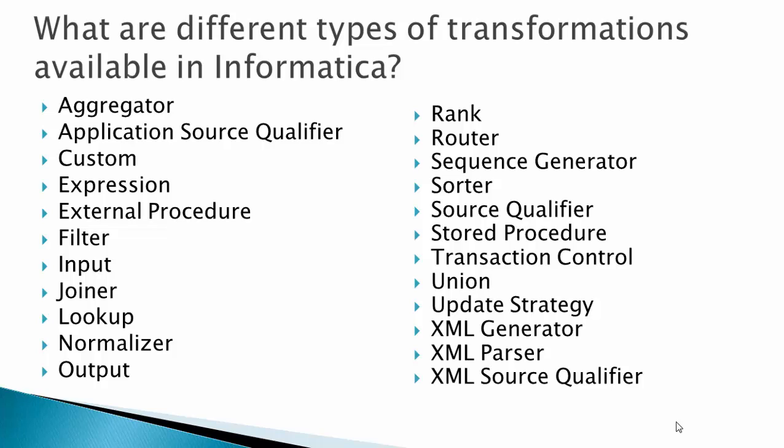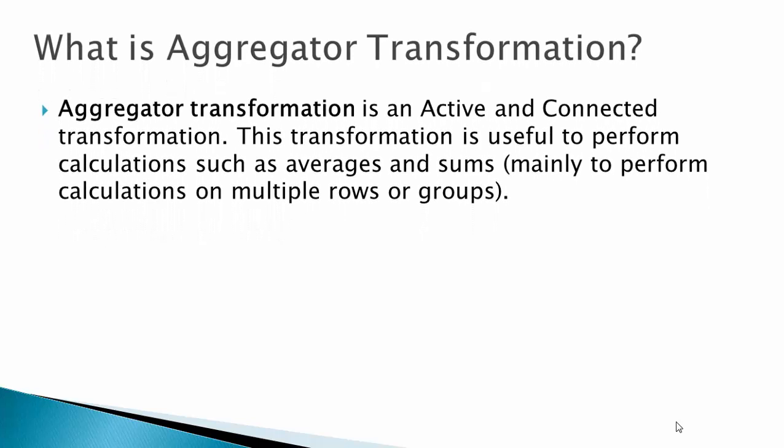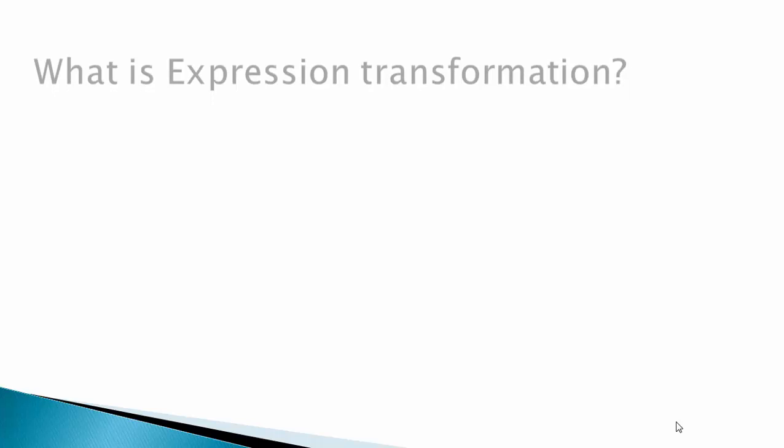In an interview, if they ask about transformations, you can mention some of these. Aggregator transformation is an active and connected transformation. As we saw in part 1, aggregator is a connected transformation. It is useful to perform calculations such as average and sum — mainly to perform calculations on multiple rows or groups.